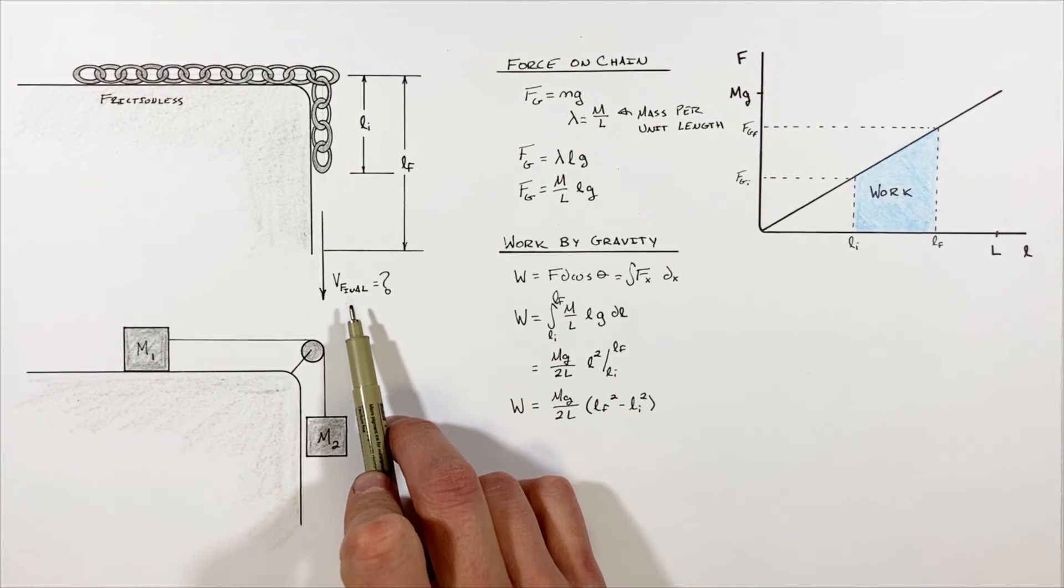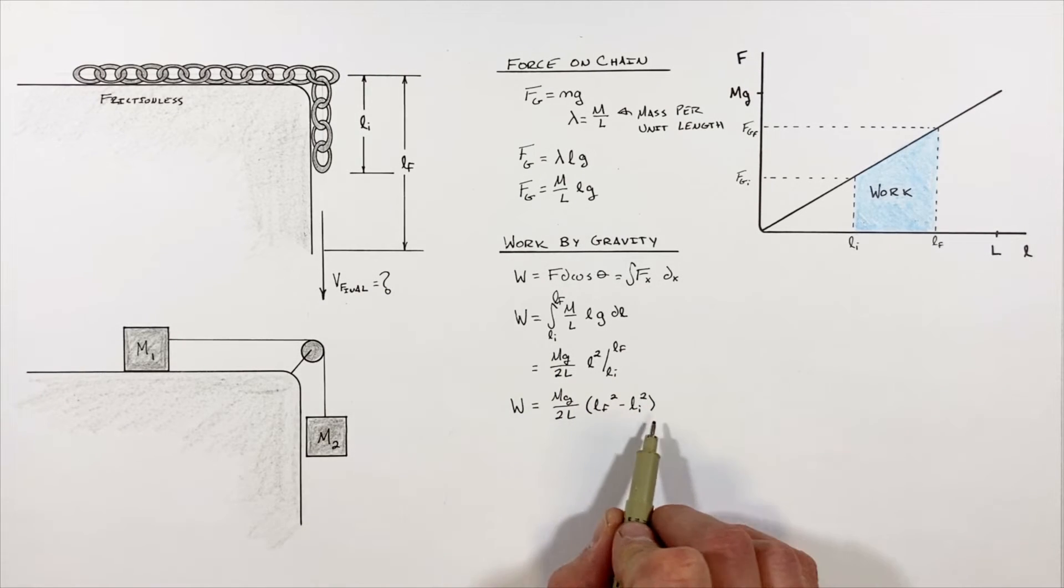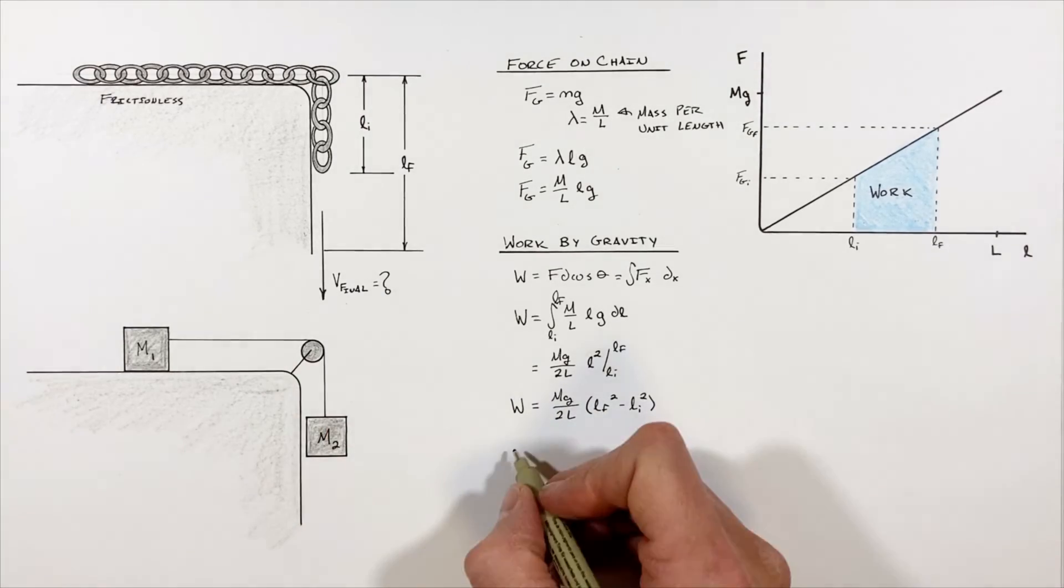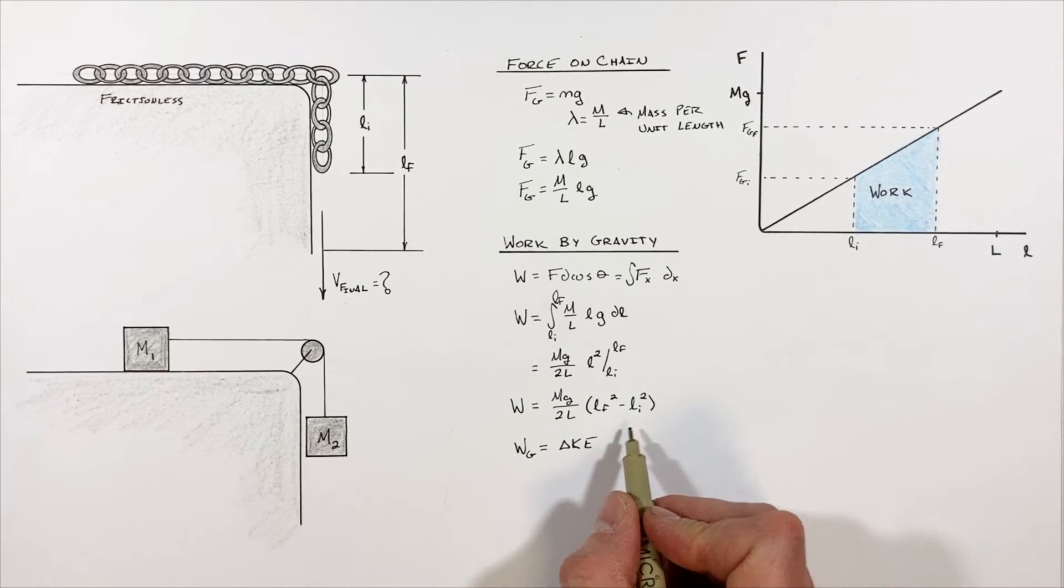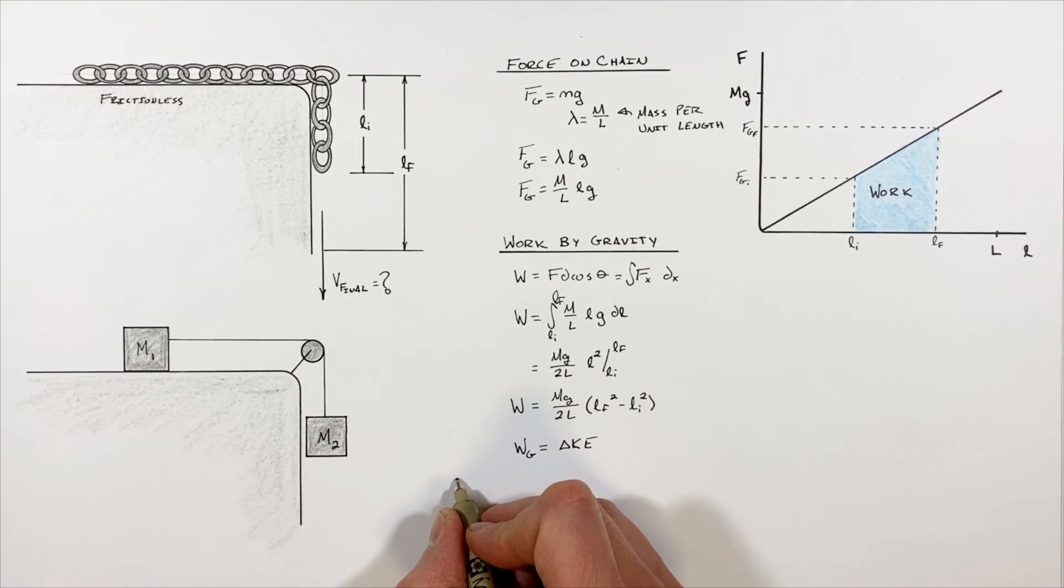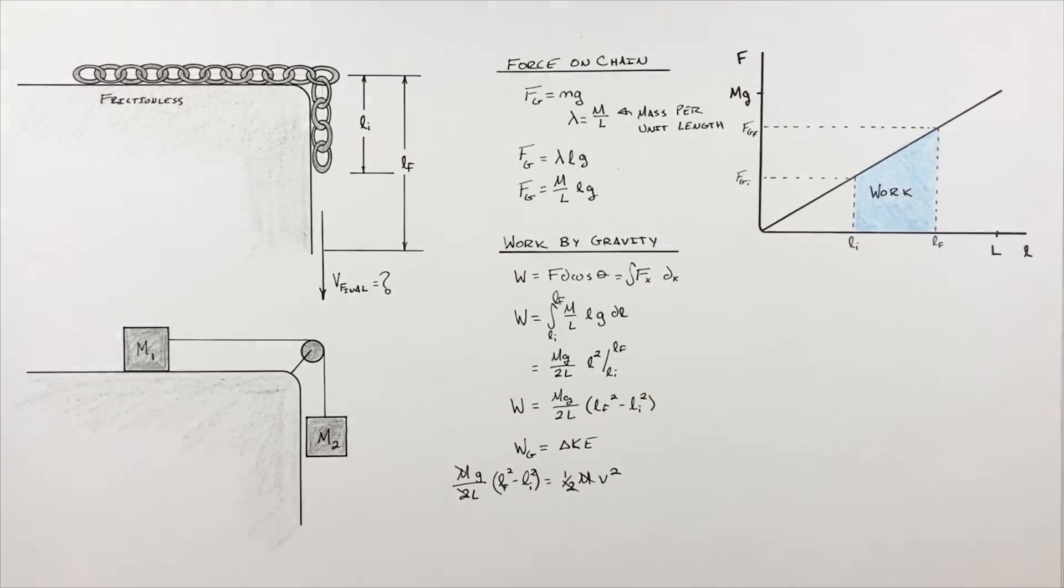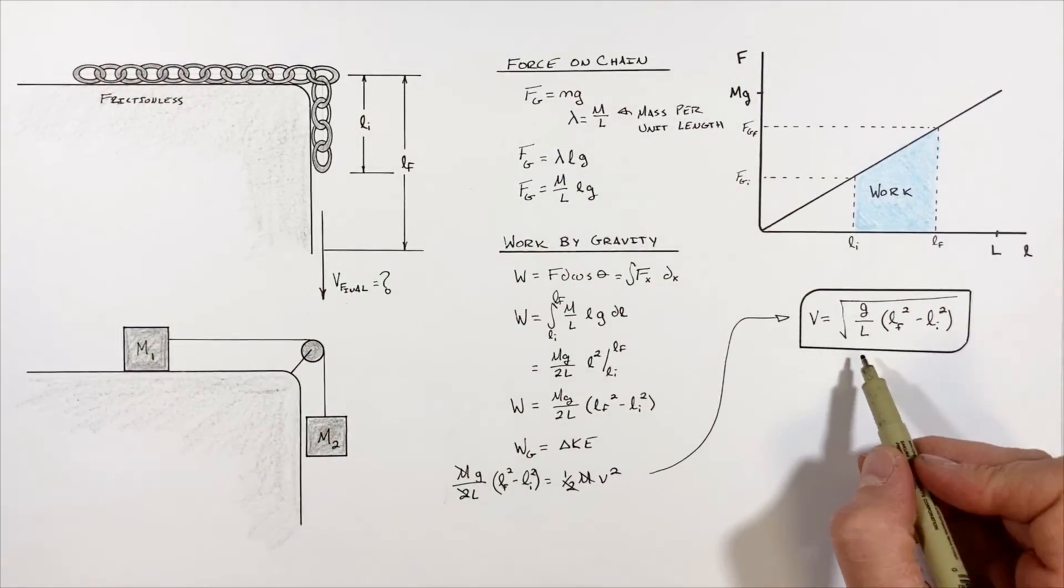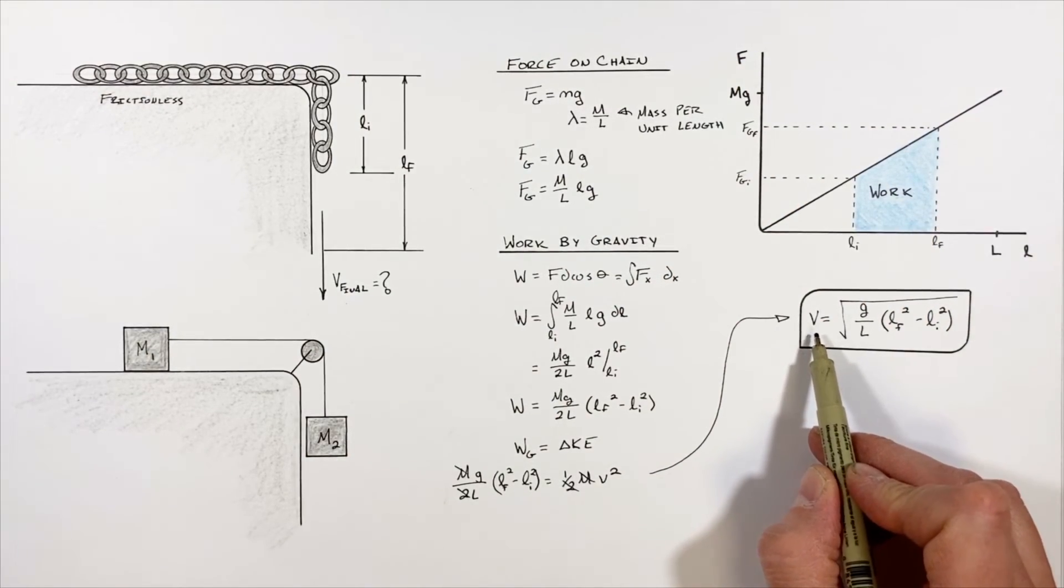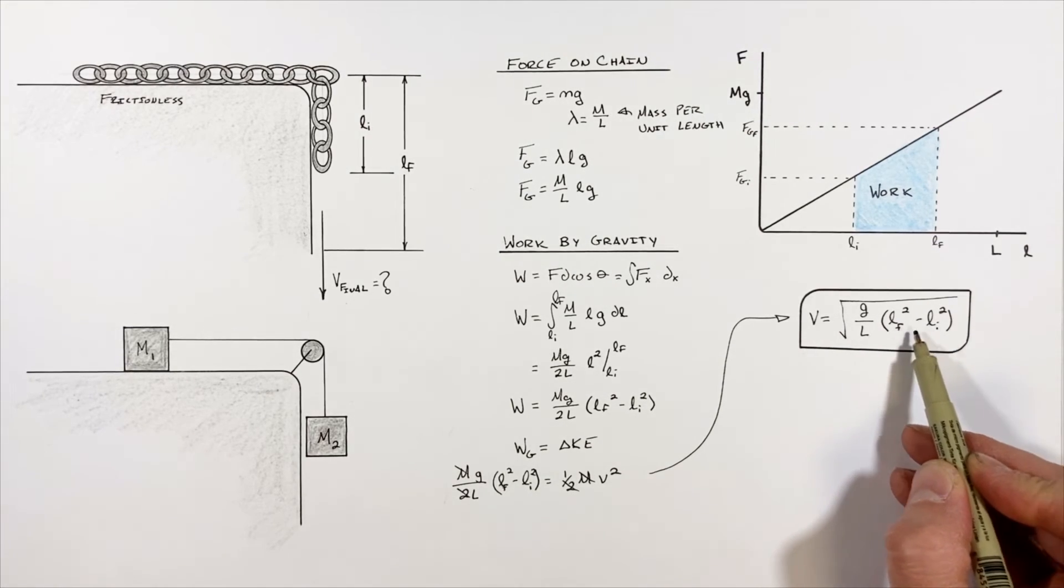Now remember we're trying to solve for the final velocity of this chain after it's moved down some distance. What I want you to realize is that this work done by gravity is the change in kinetic energy of the chain. So if the chain started at rest, we simply set this function equal to the kinetic energy of the chain, and we have a little bit of a cancel party here, and we're left with this function relating the final velocity of the chain to the total length of the chain as well as the initial and final lengths of chain hanging off the edge of the table.